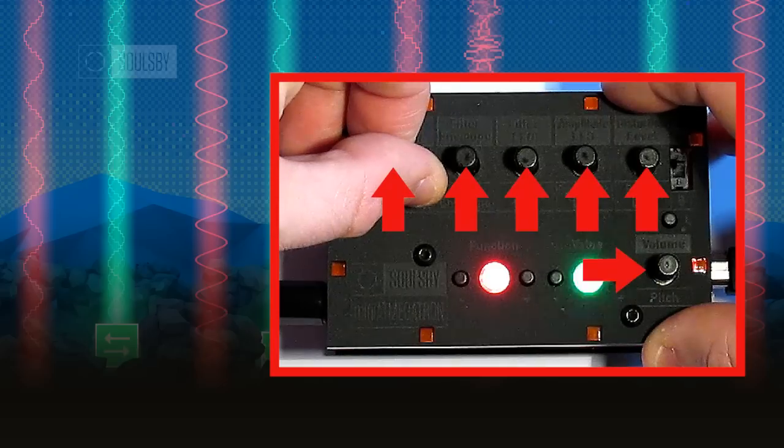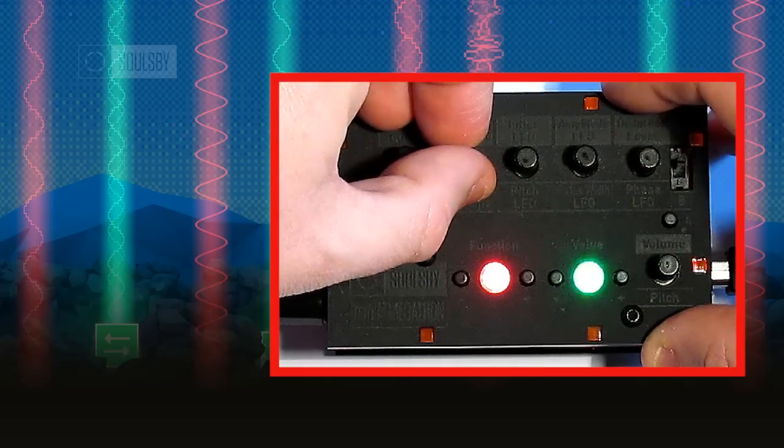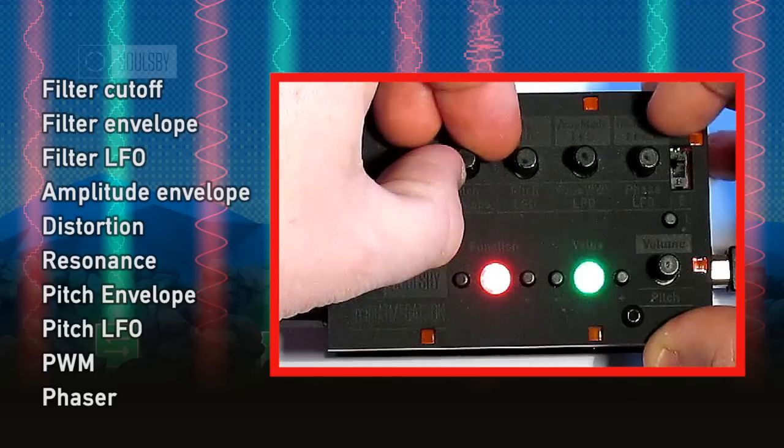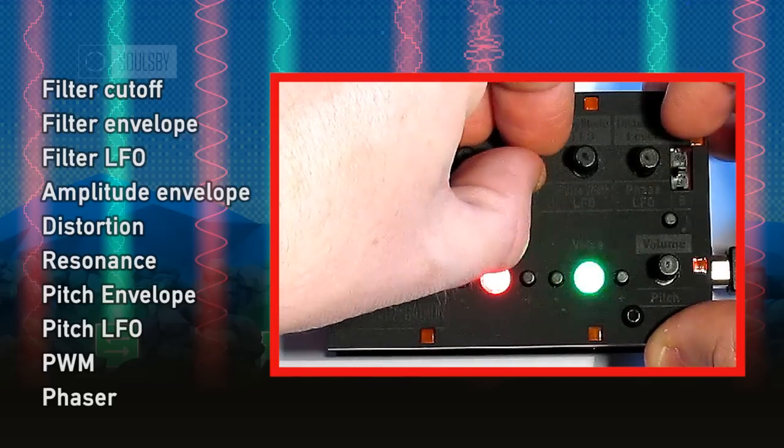The six knobs control other aspects of the sound. There are 12 parameters that can be controlled depending on the position of this switch. These include filter cutoff frequency, filter shaping, pitch shaping and pitch offset.